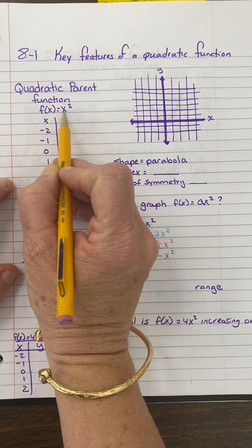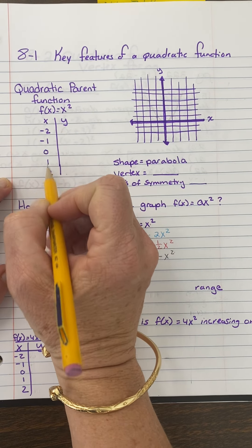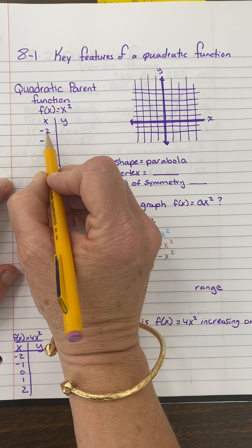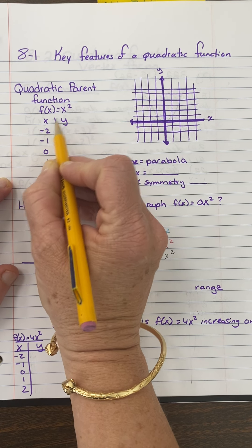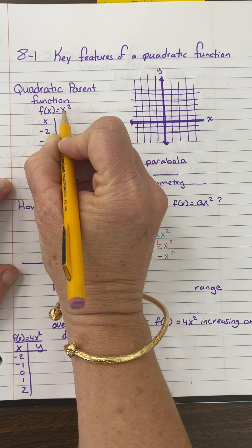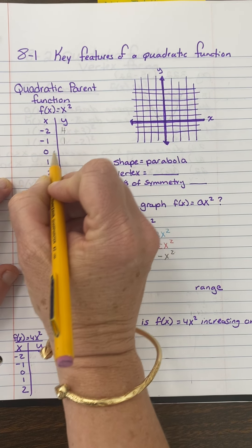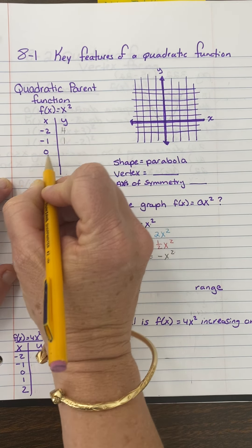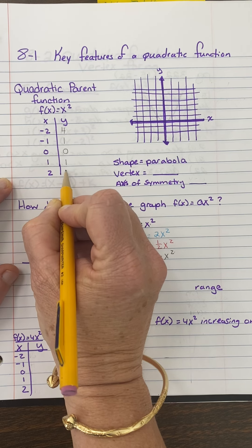So here is the equation for the parent function, and I'm going to plug in these intervals to see what I get. I plug in negative 2, negative 2 squared is 4. Negative 1, negative 1 squared is 1. 0, 0 squared is 0. 1, 1 squared is 1. 2 squared is 4.